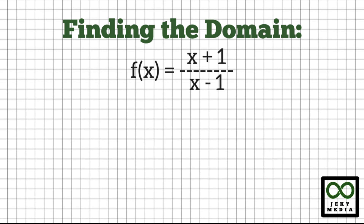Let's have another example. The rational function f(x) equals (x plus 1) over (x minus 1). Step 1: Let's focus on the denominator and create an inequality where it will not equal zero. x minus 1 is not equal to zero.